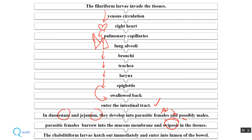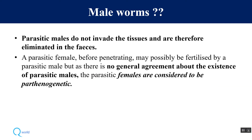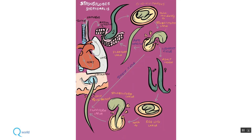Because the female is ovo-viviparous, she will oviposit there, and rhabditiform larvae hatch out immediately and are released into the environment, which will become filariform larvae. Male worms do not invade tissue and can sometimes be seen in feces. There is also controversy: some consider that female worms are parthenogenic, capable of producing larval forms without male fertilization.